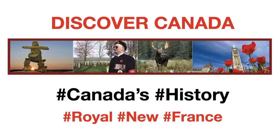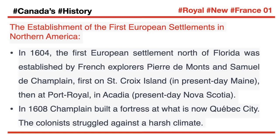In 1604, the first European settlement north of Florida was established by French explorers Pierre de Monts and Samuel de Champlain — first on St. Croix Island, in present-day Maine, then at Port Royal, in Acadia, present-day Nova Scotia. In 1608, Champlain built a fortress at what is now Quebec City.